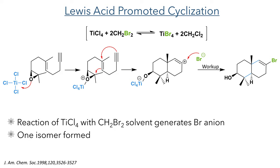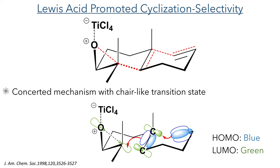Only one isomer was formed in this reaction, and we can explain this by looking at the transition state. The two carbon-carbon bonds which are formed happen through a concerted mechanism, and this occurs in the lowest energy conformation, which is a chair-like transition state for both of the newly formed rings. In this conformation the reacting orbitals can overlap and form the desired bonds.